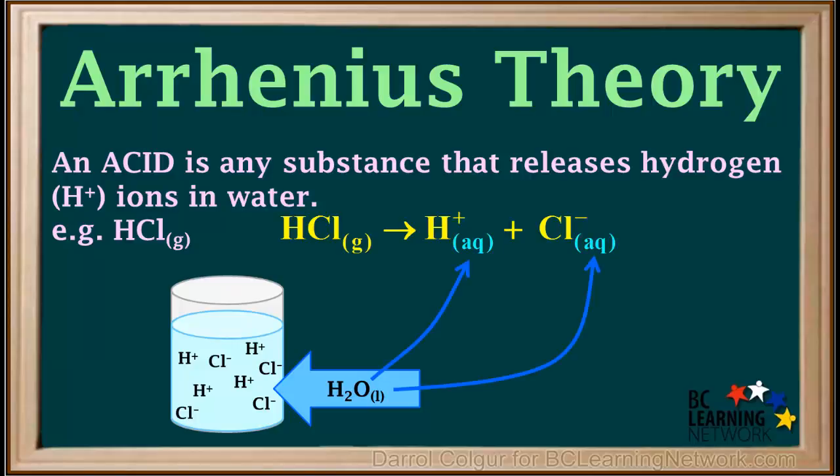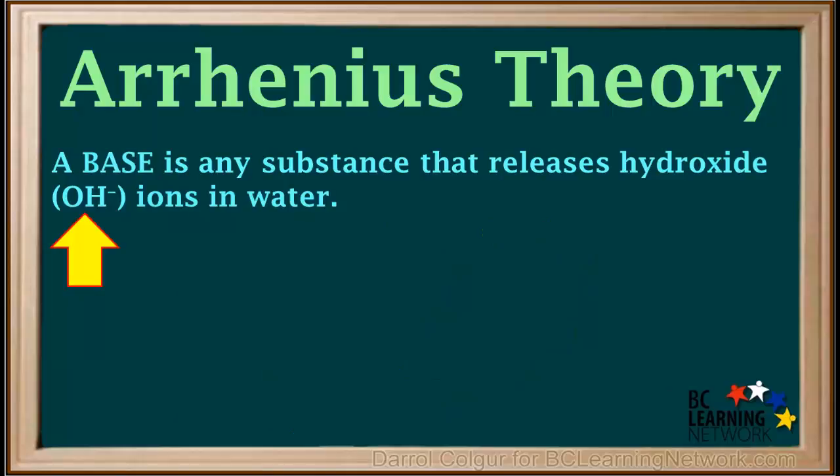Because this is a water solution, the subscripts Aq for aqueous are used for the hydrogen and chloride ions in the equation. According to the Arrhenius theory, a base is any substance that releases hydroxide, or OH- ions in water.